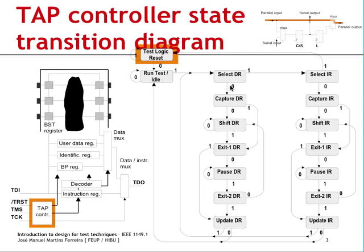In the upper right of the slide I have included the boundary scan cell circuit, indicating what the operating mode is corresponding to each position in the state diagram. As we move through the state diagram we will see what happens to the operating mode of each boundary scan cell in the device.